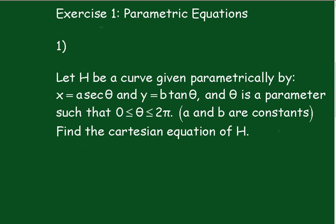Exercise 1: Parametric Equations. Number 1. Let H be a curve given parametrically by x equals a sec theta and y equals b tan theta, and theta is a parameter such that theta lies between 0 and 2 pi radians, a and b being constants. You have to find the Cartesian equation of H.